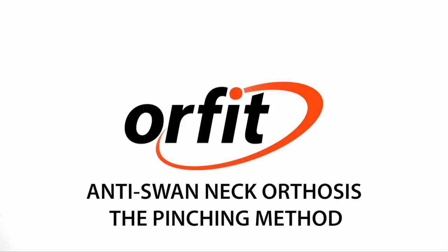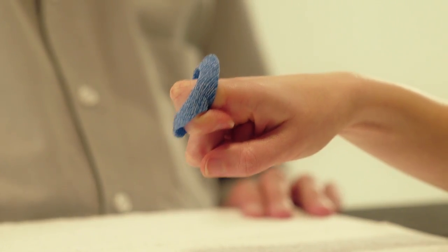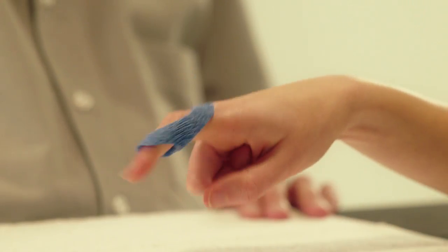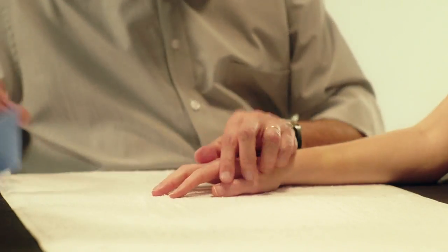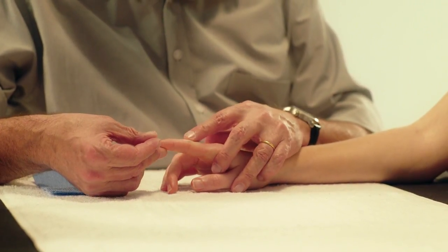Anti-swan neck orthosis using the pinching method. Here we will demonstrate how to fabricate an orthosis to prevent hyperextension of the PIP joint, also known as the swan neck deformity. The purpose is to prevent hyperextension of the PIP joint in the swan neck deformity.